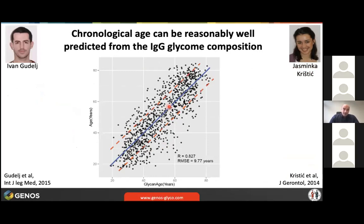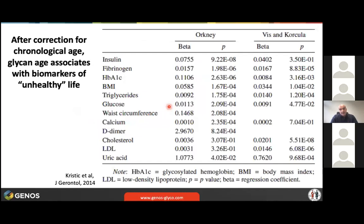When we put IgG glycans into a simple predictive model, we could predict the chronological age of a person plus or minus nine years. When we did this first nearly 10 years ago, it was interesting because there were no good markers for chronological age. Methylation is now a better marker for chronological age, but the original Horvath clock is almost too accurate — not very informative. Glycans actually vary quite a lot around chronological age, and what explains this difference — between glycan age and chronological age — correlates with biomarkers of unhealthy lifestyle. People with an unhealthy lifestyle seem to change their glycans toward the 'old' glycan pattern faster.